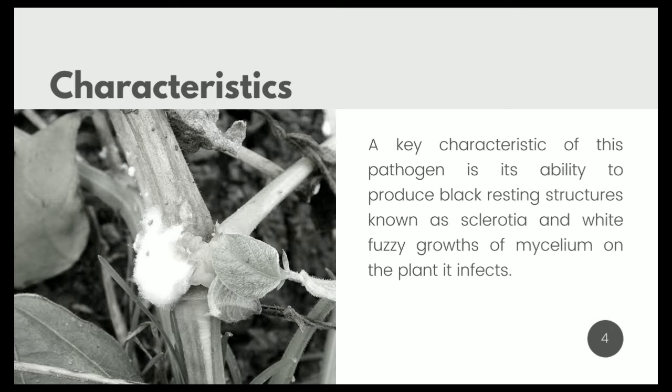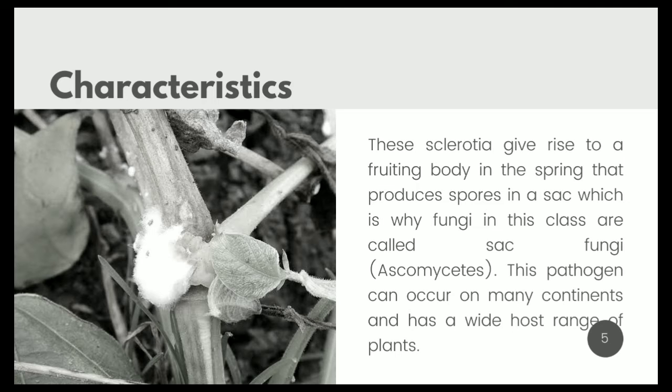A key characteristic of this pathogen is its ability to produce black structures known as sclerotia, and the white fuzzy growths of mycelium on the plant it infects. These sclerotia give rise to a fruiting body in the spring that produces spores in a sac, which is why fungi in this class are called sac fungi.